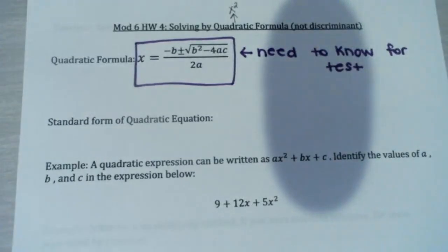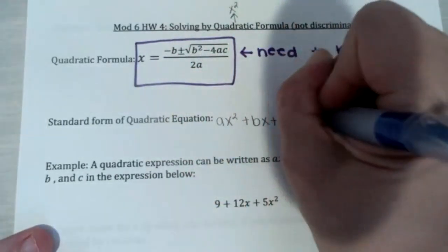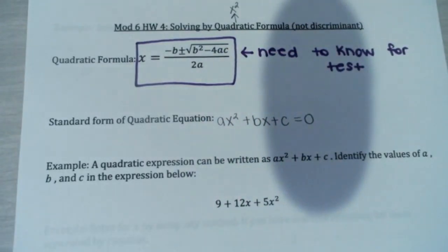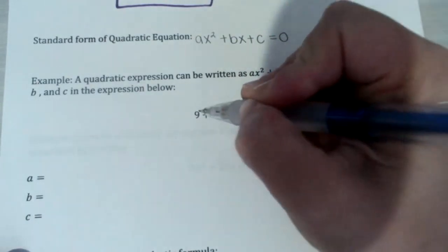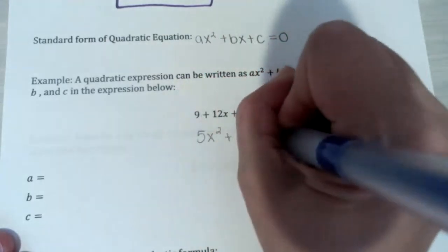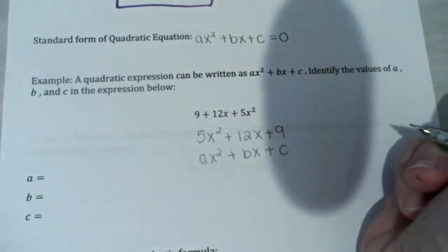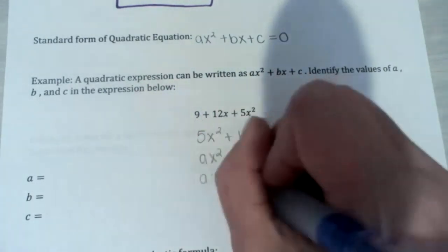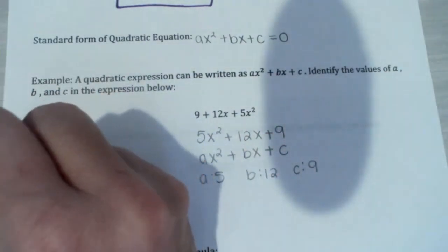Our standard form for a quadratic equation is ax squared plus bx plus c equals zero. We need to put the expression in the correct order first. For example, if we have 9 plus 12x plus 5x squared, we rewrite it as 5x squared plus 12x plus 9. Now it's in standard form, so a is 5, b is 12, and c is 9.